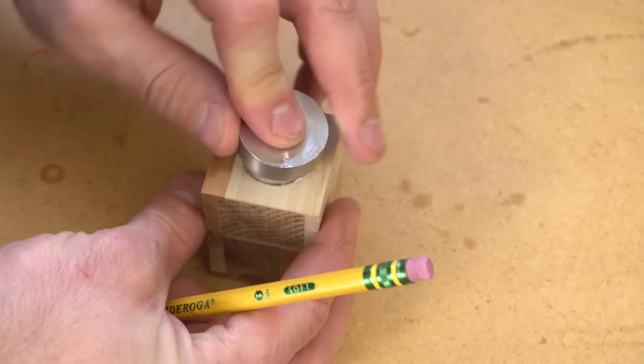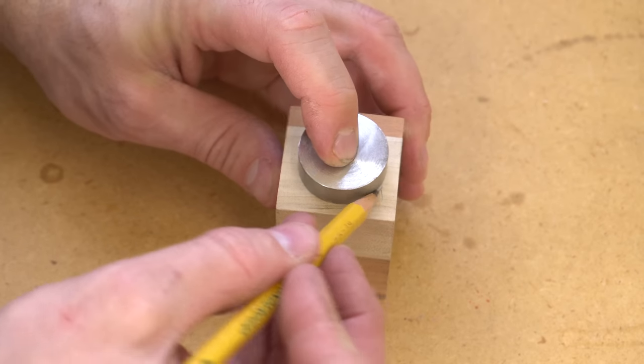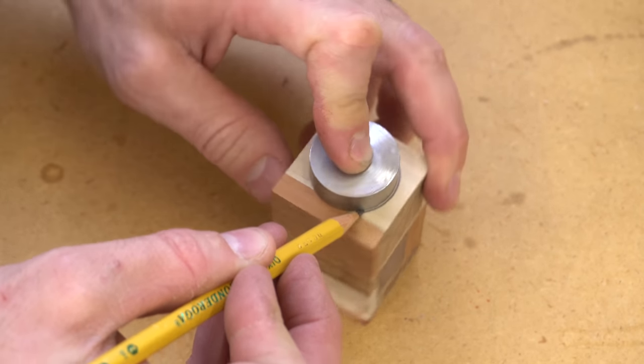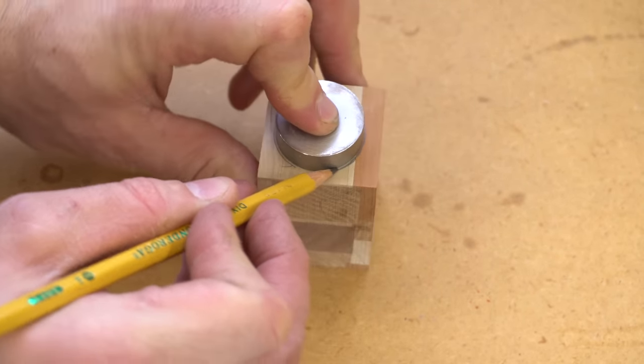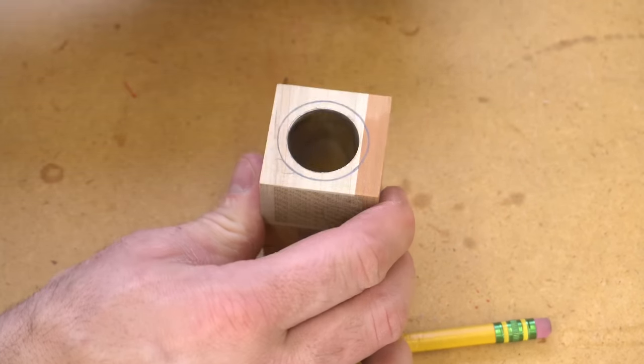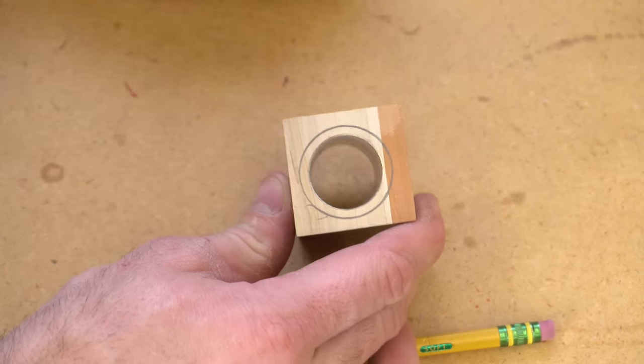I put one of the cigar holder bushings into the blank and traced around it just to show you what the end result is going to be. You can see that there's really only going to be about an eighth of an inch of material remaining and I'm going to have to remove the rest.